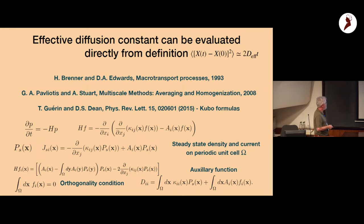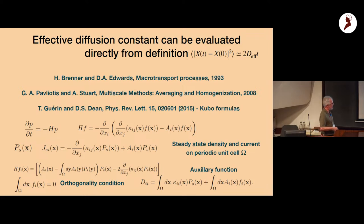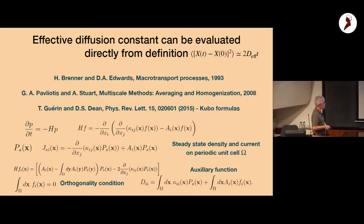P_s is the solution to H·P_s = 0 with periodic boundary conditions. There is sometimes a current associated with this steady state, which complicates things. The diagonal component of the effective diffusion constant is given by a formula involving K_ii(x) — the diffusion constant — its average value, plus a correction term involving the drift and an auxiliary function f_i(x).